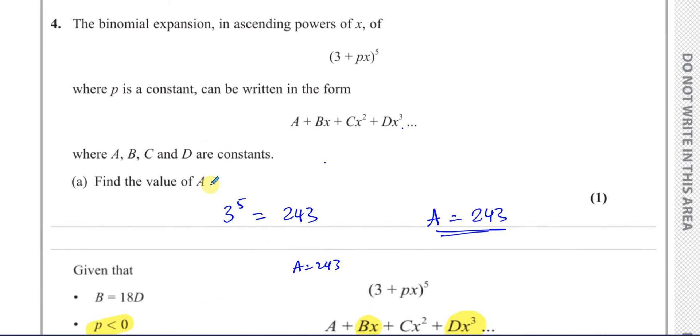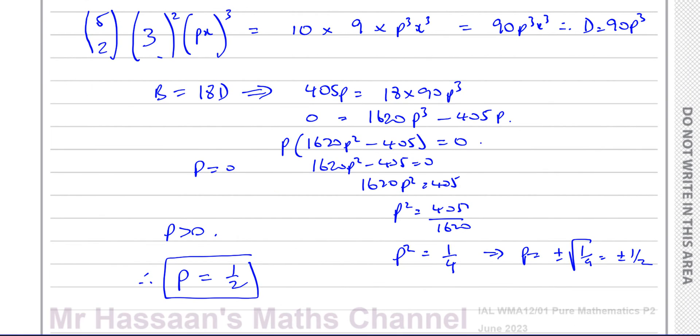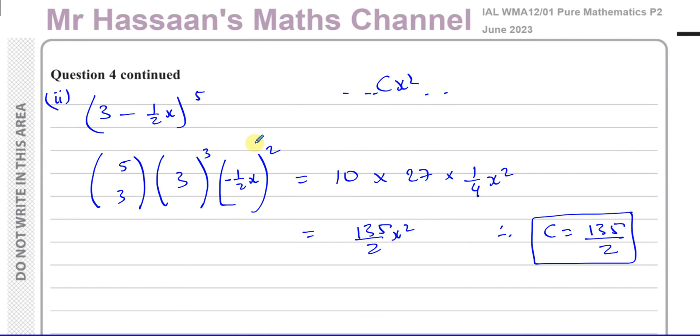And there's the answer to part 2 of this question. This is part B section 2, the value of C. So that answers this question. Not too difficult binomial expansion question. Other questions from this particular paper, June 2023 from P2, can be found in the playlist.